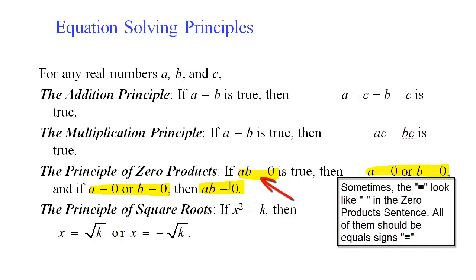Not only can we add, subtract, multiply, and divide both sides, but we can also square both sides or take the square root of both sides and the equations are still equivalent. We just have to worry about introducing possible extra answers.